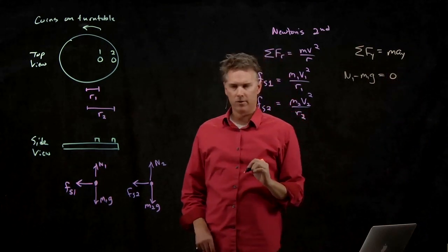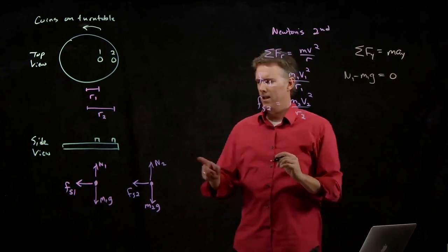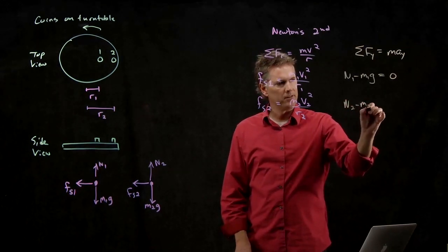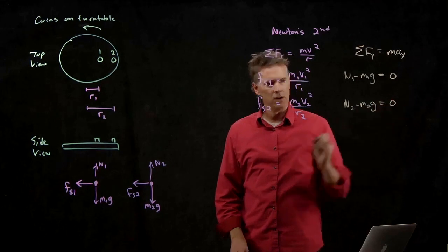And so we have n1 minus m1g is equal to 0. Acceleration is 0 in the vertical direction. And for the second one, we have n2 minus m2g is equal to 0.